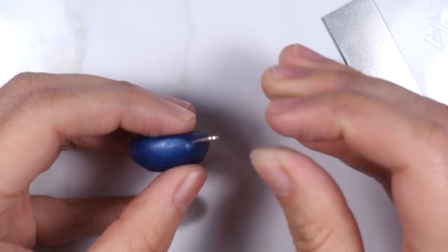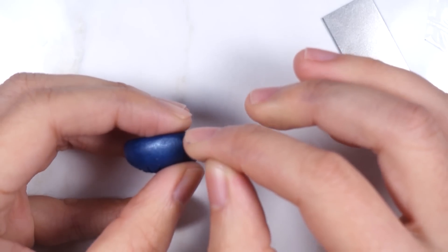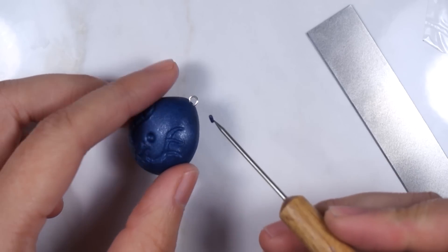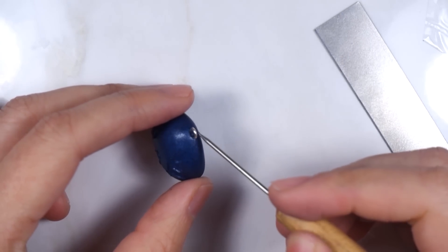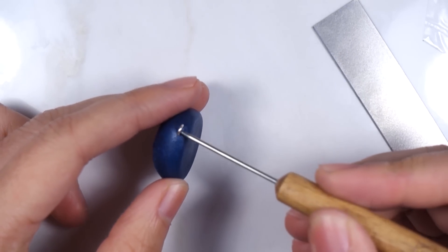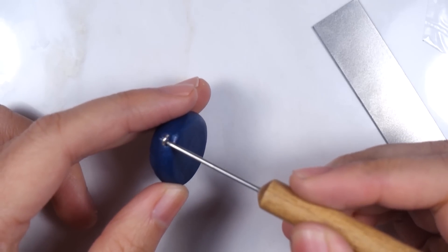Insert an eye pin at the top. I like to add a tiny bit of clay at the gap created by the eye pin just to seal up and secure the eye pin from coming loose.